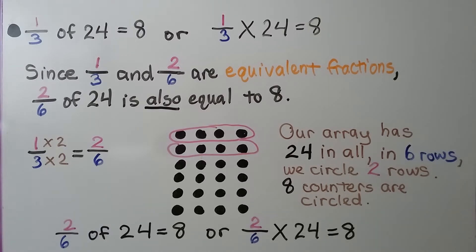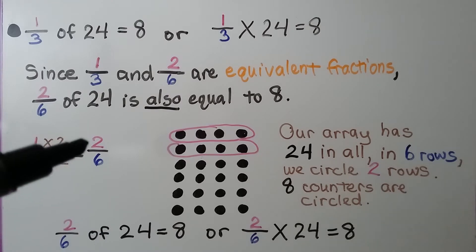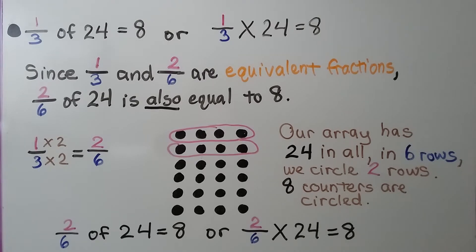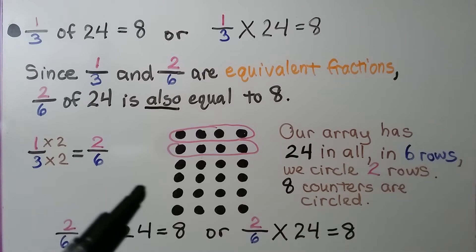Since one-third and two-sixths are equivalent fractions, two-sixths of 24 is also equal to 8. If we have one for a numerator and three for a denominator and multiply both the numerator and denominator times 2, we get two-sixths, an equivalent fraction. Our array has 24 in all in six rows. We circle two rows — eight counters are circled. Two-sixths times 24 is equal to 8. We get the same product, but our array looks different than one-third times 24.